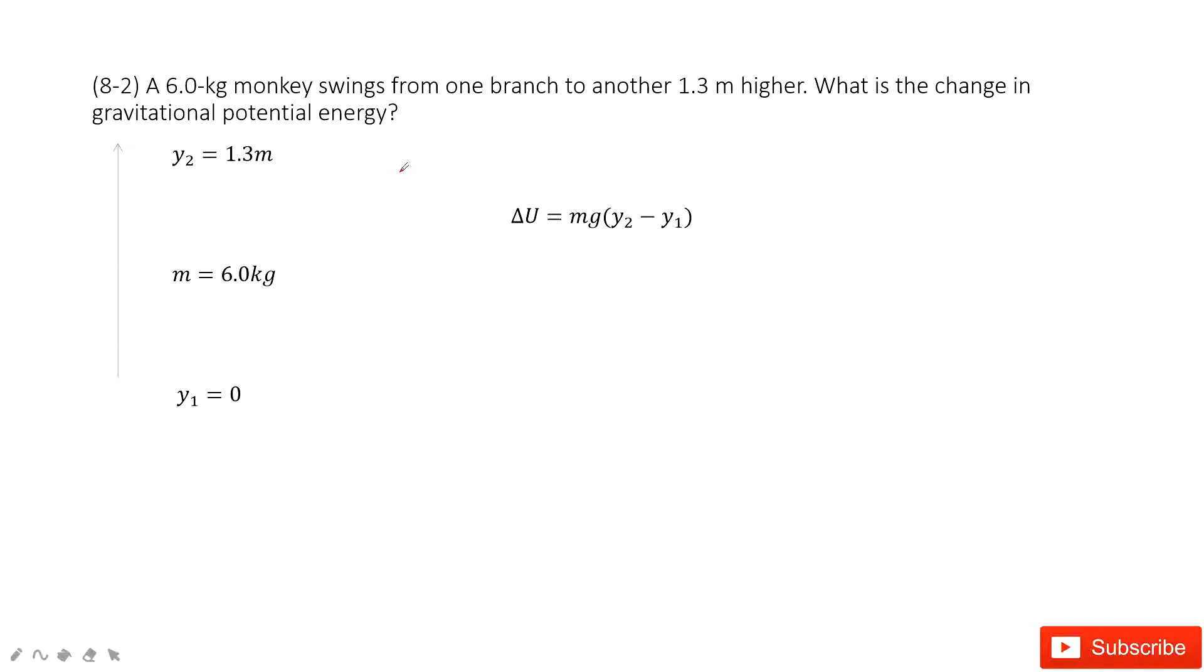We can see we have a monkey, right? And the mass is given. And it moves upward from y1 to y2, and y1 is 0 meters, y2 is 1.3 meters high.